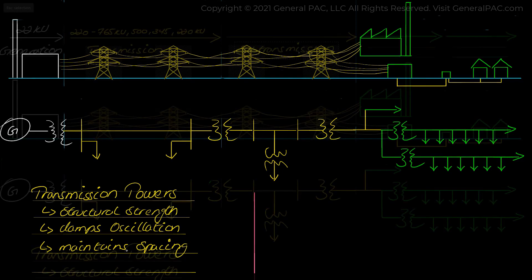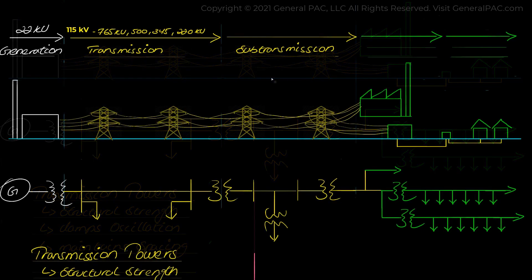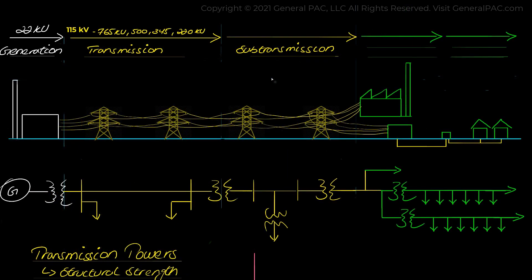Now the transmission system then steps down in the sub transmission system. In the sub transmission system the voltage levels are stepped down to 132 kV, 66 kV, 33 kV and so forth.